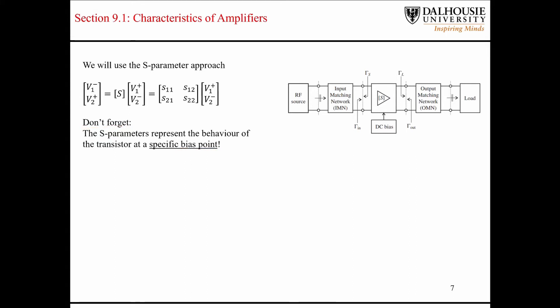So before we continue, let me just describe the notation that I'm using here. So the voltage waves on the input of the amplifier are on side 1, and the voltage waves on the output of the amplifier are on side 2 here. So I'm using this type of notation to represent that.